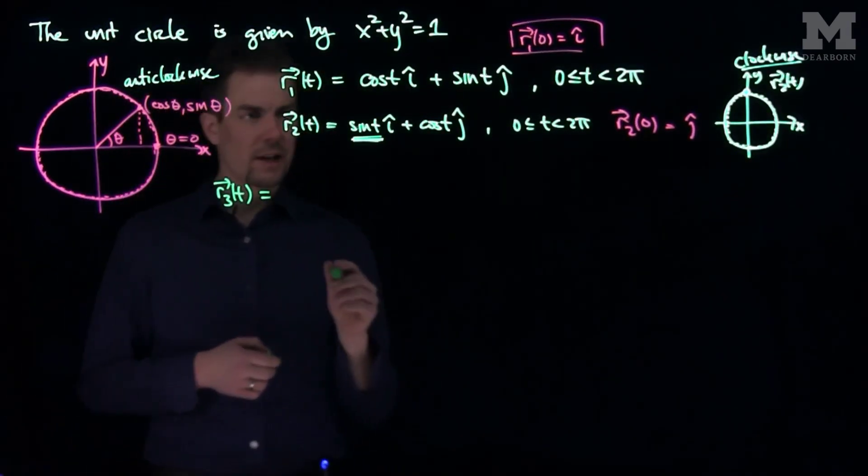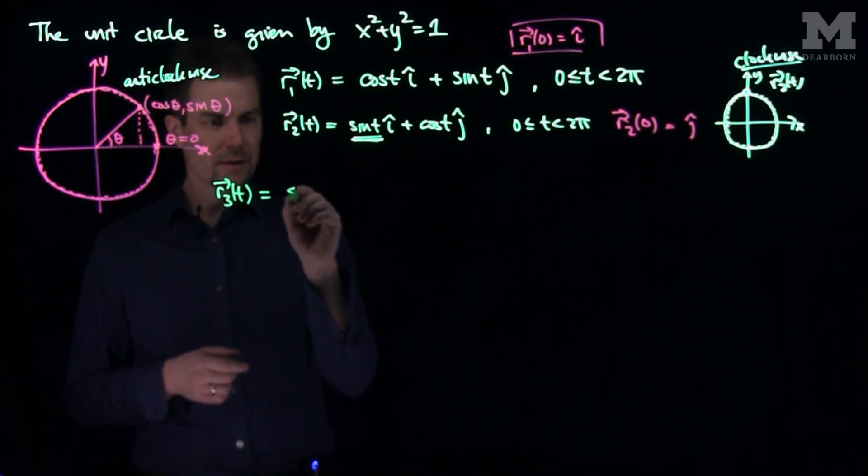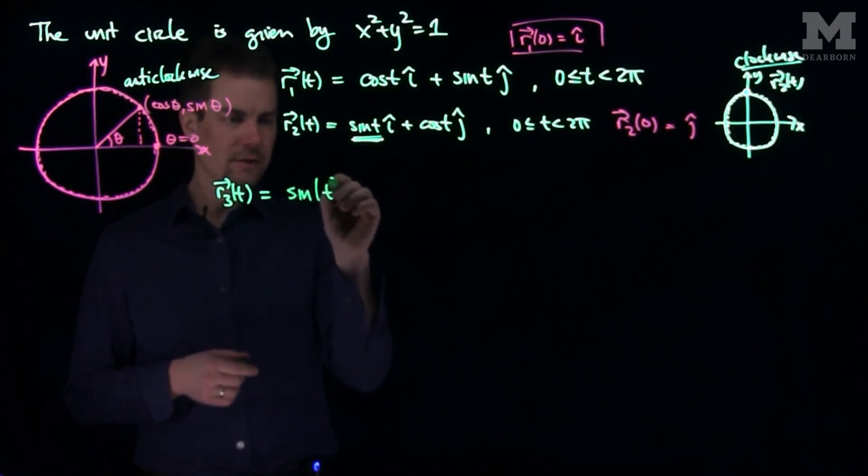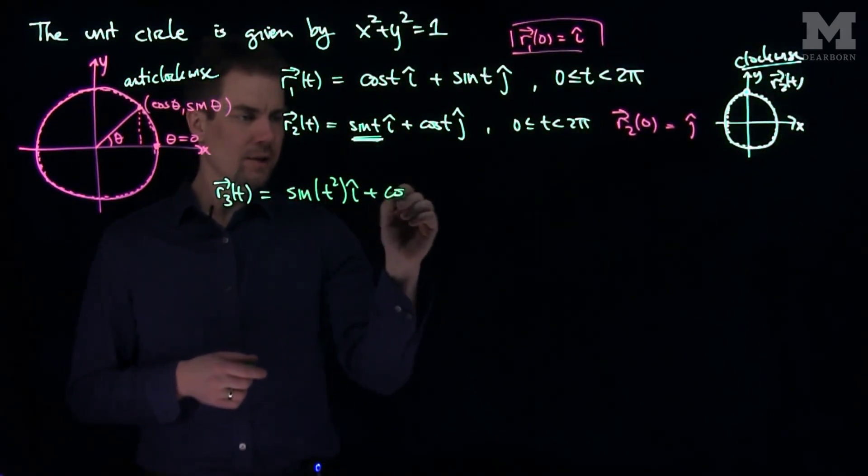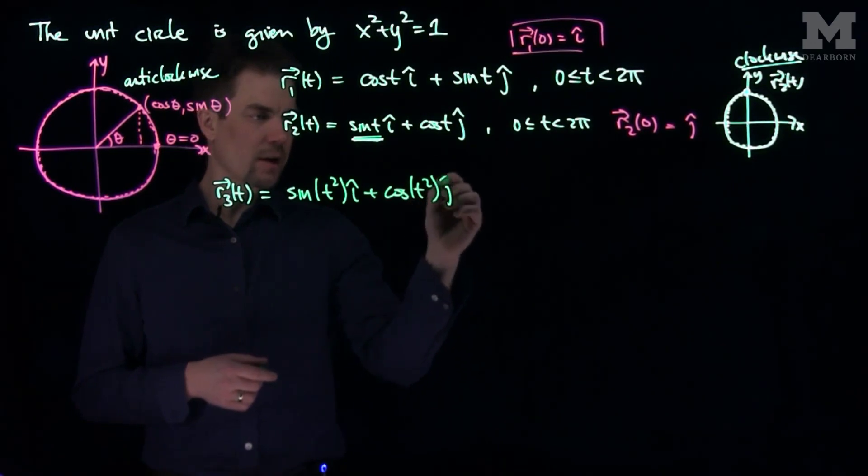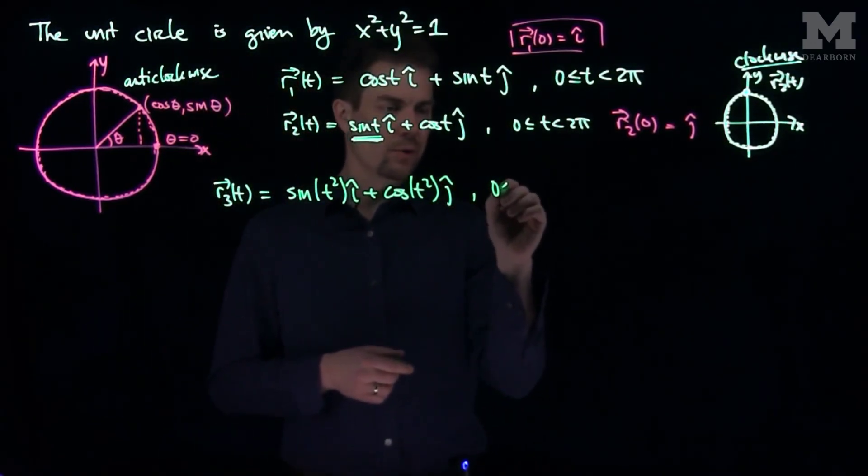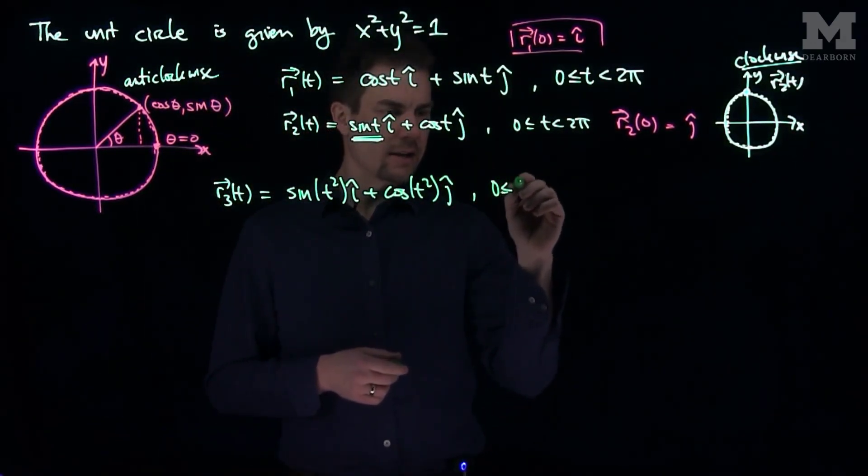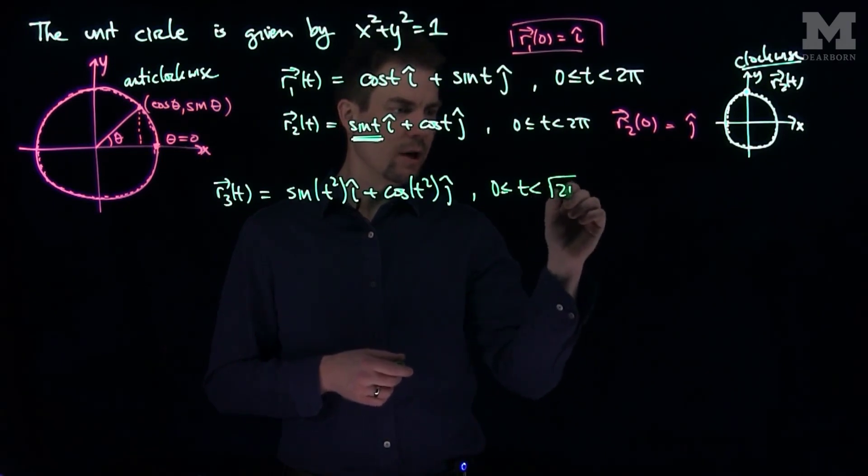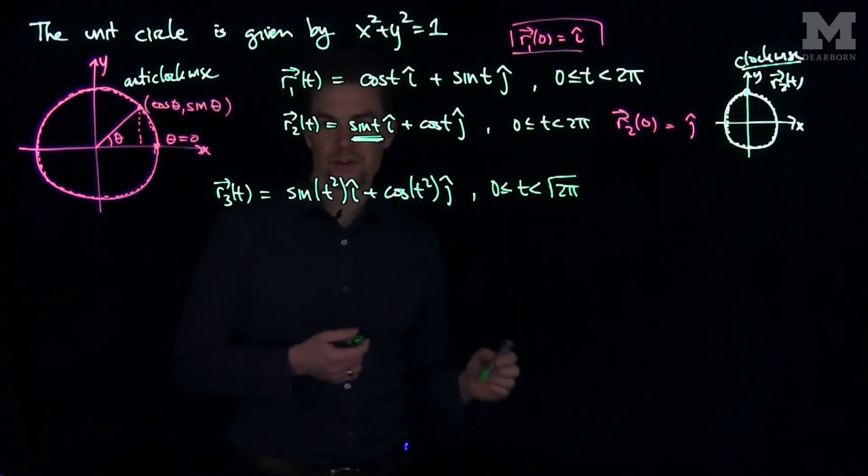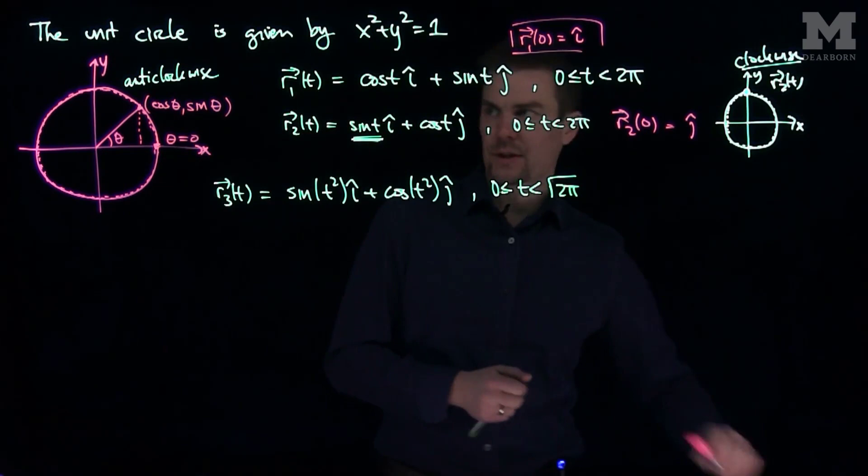And r3(t) will be the sin(t²) i hat plus the cos(t²) j hat, where t goes between zero and the square root of 2π. So this will also give us a relationship between x and y.